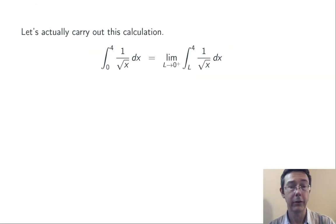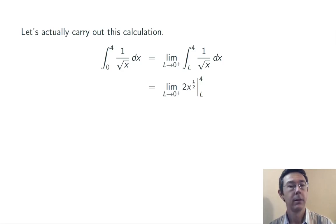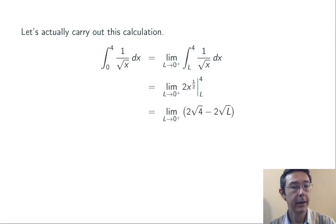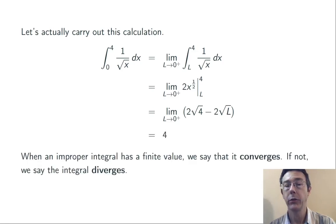So let's actually do it. We compute that integral from L to 4 of 1 over the square root of x dx, just using the second fundamental theorem of calculus. We find the antiderivative, plug in the endpoints, and then evaluate the limit, letting L go to 0 from the right. That square root of L is also going to 0, and so we're just left with 2 root 4, also known as 4.